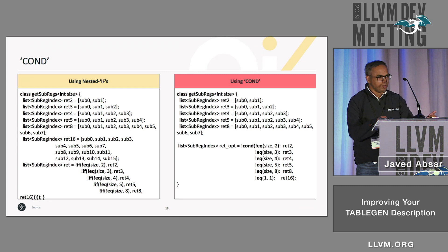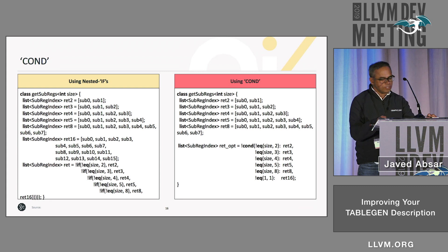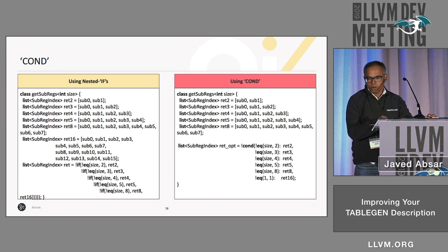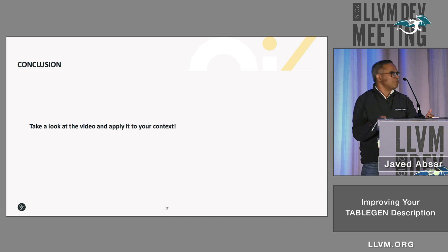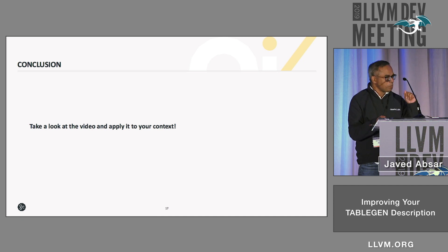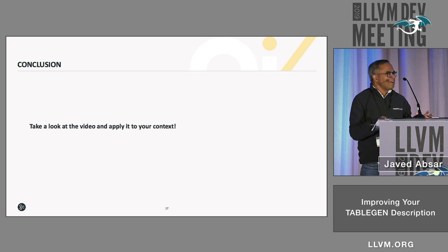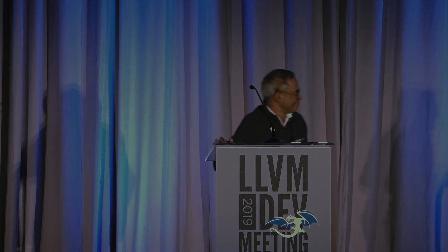If you are really tired of writing nested list ifs in TableGen, you can use the condition operator, which gives you a neat solution. There was lots of code here and I understand you couldn't follow it all, but you can go back, look at the video, and hopefully you're going to rewrite your TableGen files. Thank you very much.